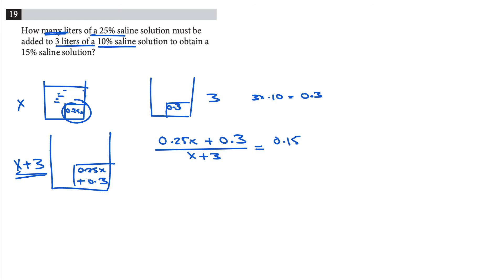Okay, now let's try to solve it. This is the salt, this is the total amount, and that's the actual definition of the saline solution, right? That's 15% salt divided by the total volume. And now just move this to the top here, so you get 0.25x plus 0.3 is equal to 0.15 times x plus 3.